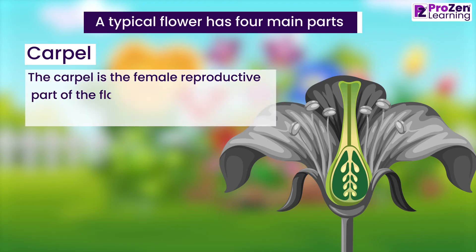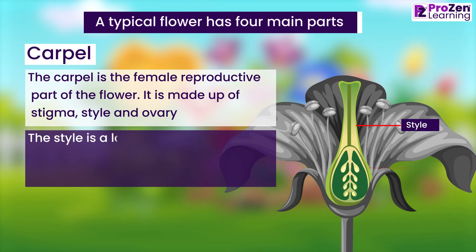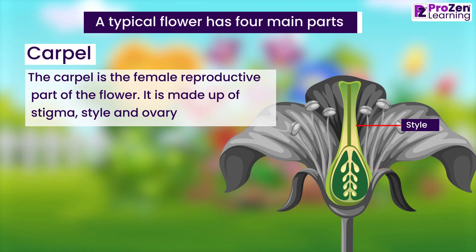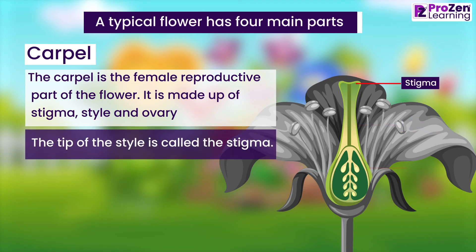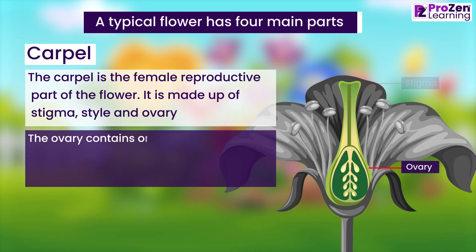The carpel is the female reproductive part of the flower. It is made up of the stigma, style, and ovary. The style is a long narrow tube that rises from the basal swollen part called the ovary. The tip of the style is called the stigma. The ovary contains one or more ovules.